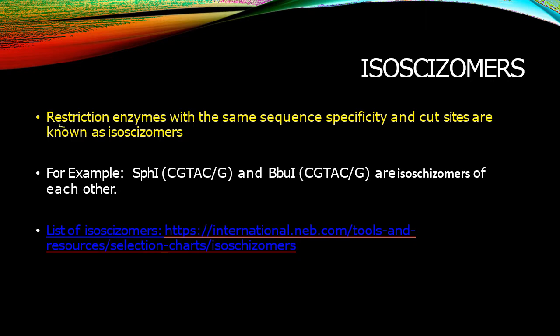Restriction enzymes with the same sequence specificity and cut sites are known as isoschizomers. This is the simple definition of isoschizomers — these are restriction enzymes with the same sequence specificity and cut sites.